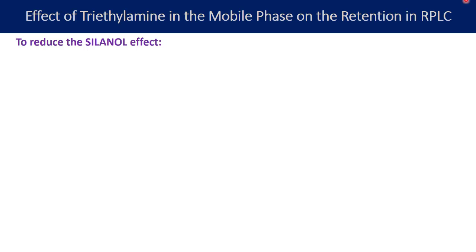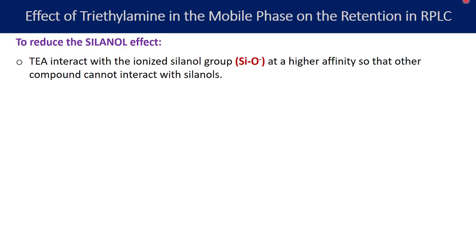What is meant by the silanol effect? In reverse phase liquid chromatography, our stationary phase is non-polar in nature, like C8 or C18. This C8 or C18 stationary phase is called a bonded stationary phase, and you need a base material for the bonding to happen, like silica. Silica is used as the bonding material and silica comes with free silanol groups, or SiOH. This SiOH actually gets replaced by the C8 or C18 linkages. But does this reaction happen 100%? Do all silanol groups bind with the C8 or C18? Absolutely not.